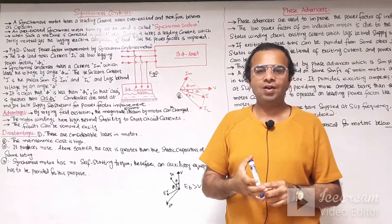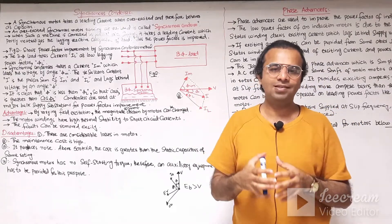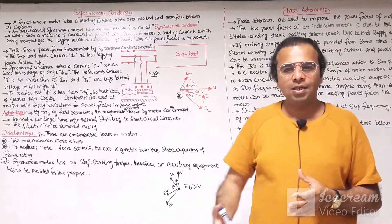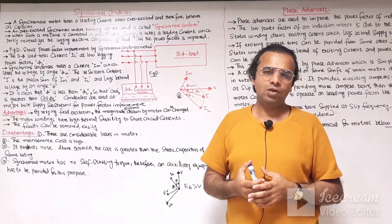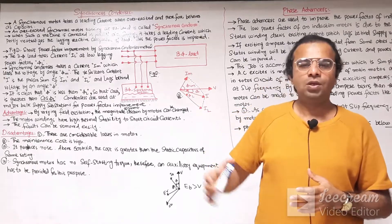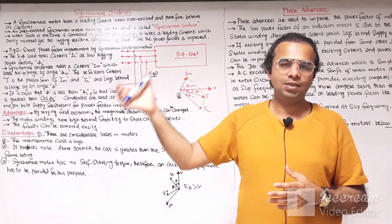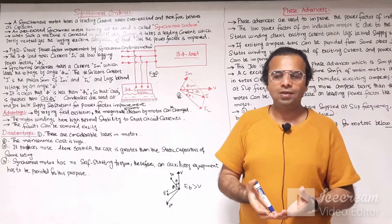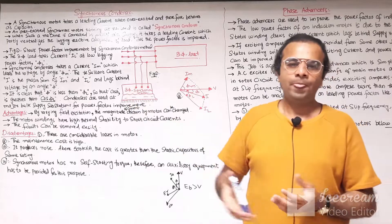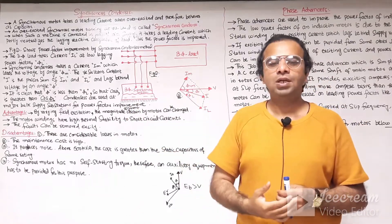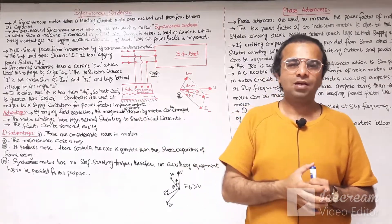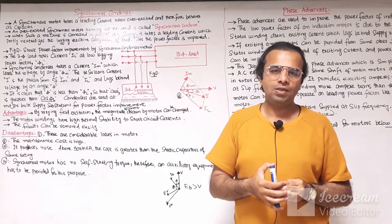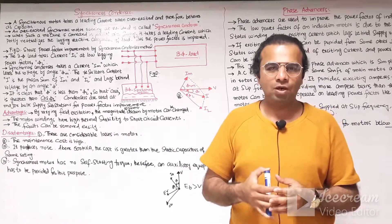According to Faraday's law of electromagnetic induction, whenever the flux linking with a coil changes, an EMF is induced. The rotor of the synchronous motor is also excited through an external DC excitation source to produce the magnetic field, and the rotor is driven through an external prime mover, normally steam turbines or turbo generators.